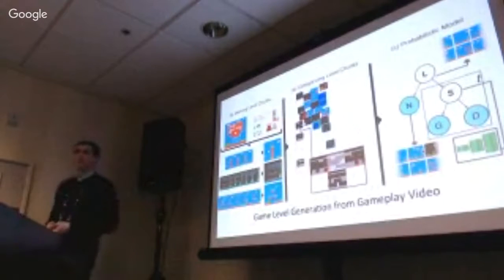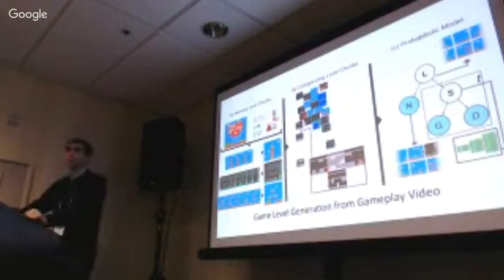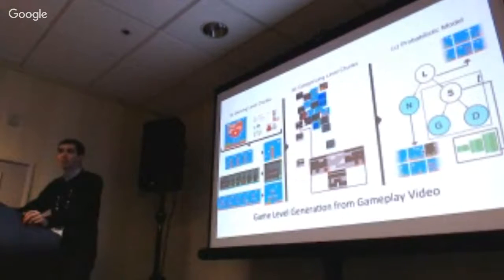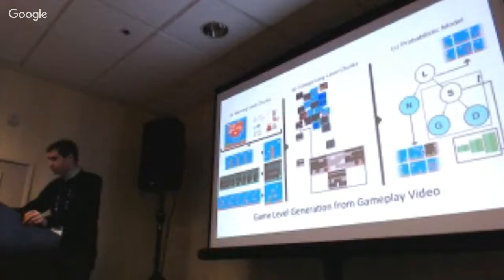At the start of this, you motivated it by talking about procedural content generation and authors who have game design ideas they want to implement. For the future, this is actually motivated by an interest in automated game design. In addition to models of level design, you can do a similar thing to extract transition functions and rules for games from gameplay video. If we have rules, a model of level design, and all the art, we essentially have a representation of the entire game.